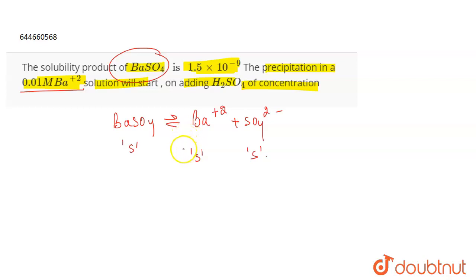Now, you are given that the concentration of BA plus 2 is 0.01 molar. This is what is given to you in the question, the concentration of barium plus 2. So we are given the solubility product of BASO4.